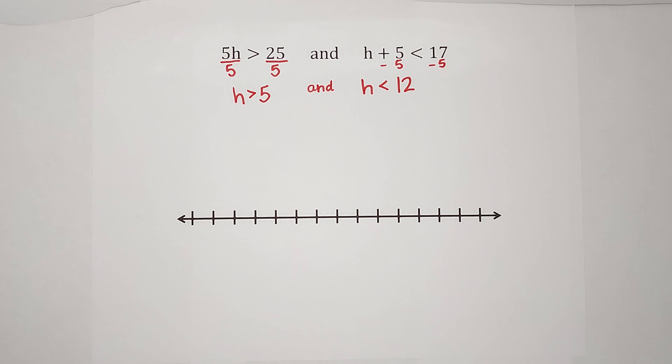So what this is telling me is h is bigger than 5 and it's smaller than 12 — it's within a limit. We could also write this with h in the middle: h is less than 12 and greater than 5. We can flip it around but it means the same thing — the sign is still open to the h.